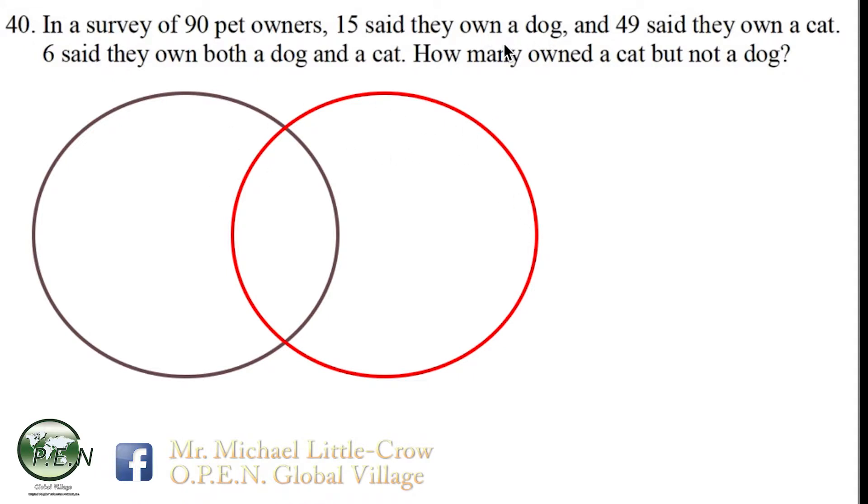As we look over this, we know we only need two circles because we're given two types of categories. We've got the dog owners and we've got cat owners, out of the total 90 pet owners.